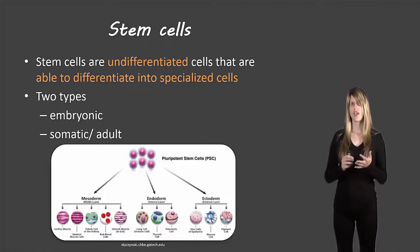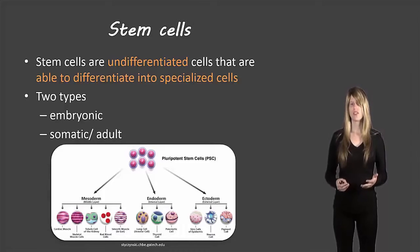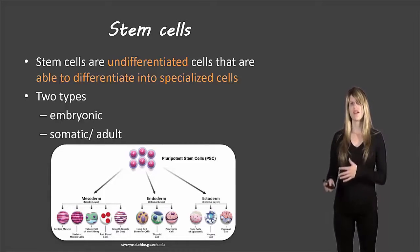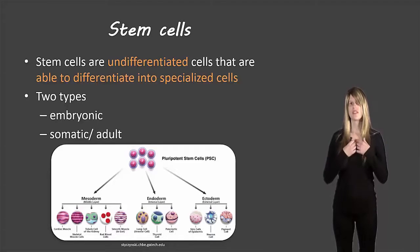There are two types: embryonic stem cells and adult stem cells. Now normally when we talk about stem cells, people think of the embryonic stem cells, but in an adult, there are stem cells as well.